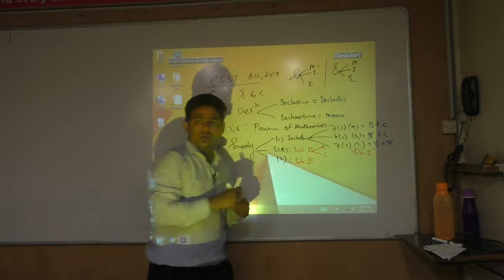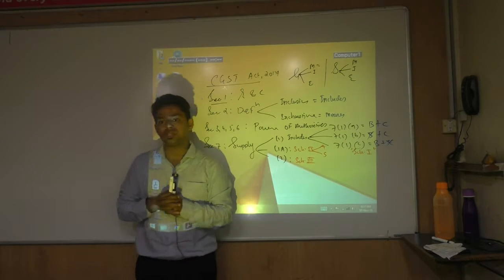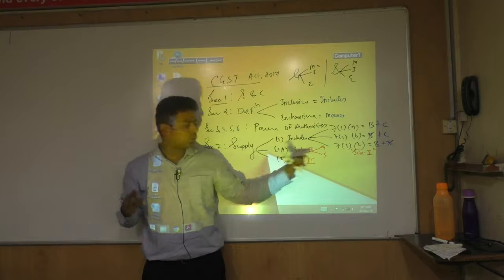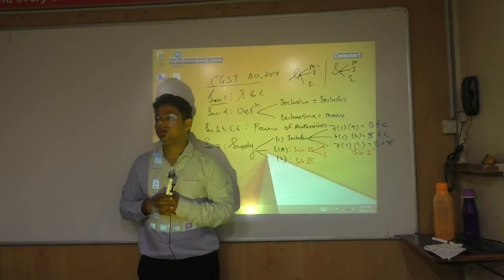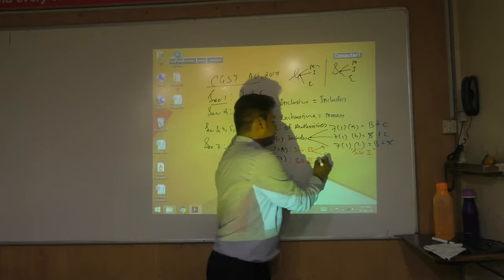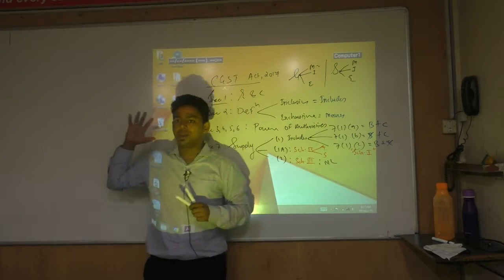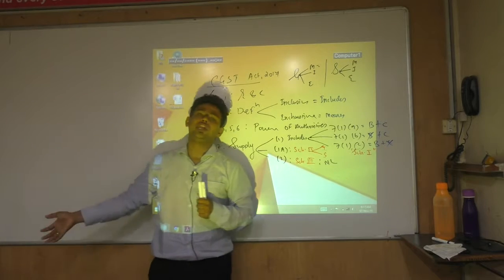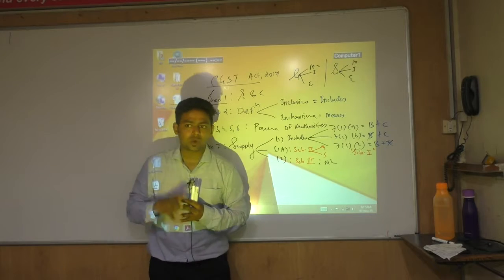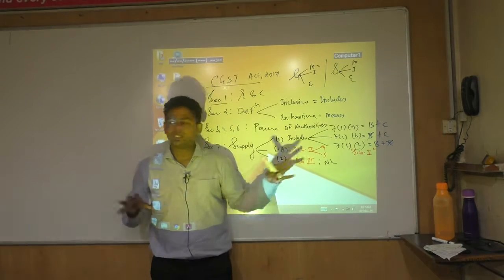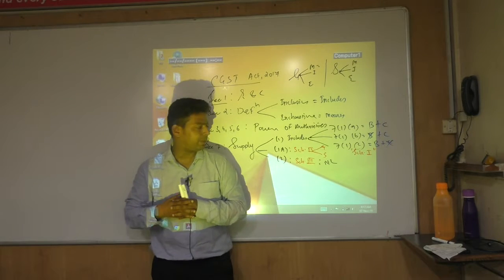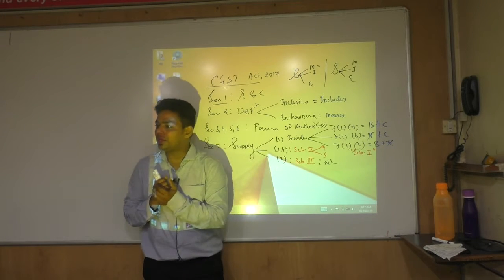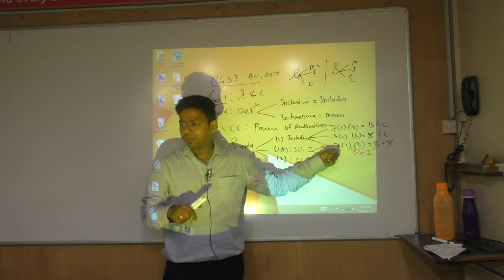Schedule 3 is given under section 7.2 and is about the negative list. There are only three schedules in GST law and all three are given under section 7. Section 7.1C has Schedule 1, section 7.1A has Schedule 2, and section 7.2 has Schedule 3. Schedule 3 is the negative list with only 5-6 activities — abbreviated as E-CALF: services of employee to employer during employment, court fees, constitutional functions, death rituals, mortuary, crematorium, and transportation of deceased.